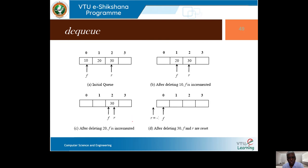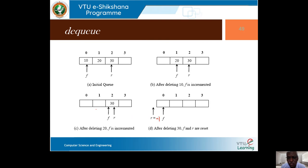When f equals r, we know it's the last element. After deleting it, we reset: f goes to 0 and r goes to -1. This indicates the queue is empty and we can start adding elements again.